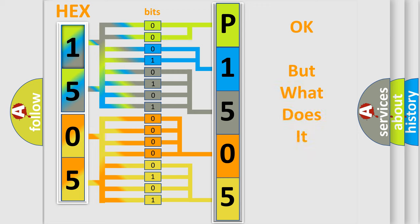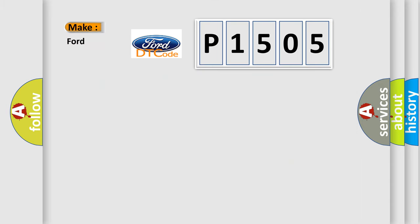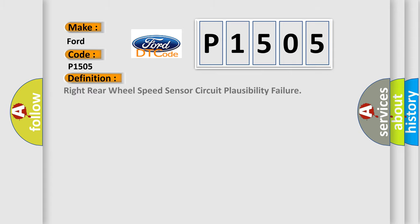The number itself does not make sense to us if we cannot assign information about what it actually expresses. So, what does the diagnostic trouble code P1505 interpret specifically for Infinity car manufacturers? The basic definition is: Right rear wheel speed sensor circuit plausibility failure. And now this is a short description of this DTC code.